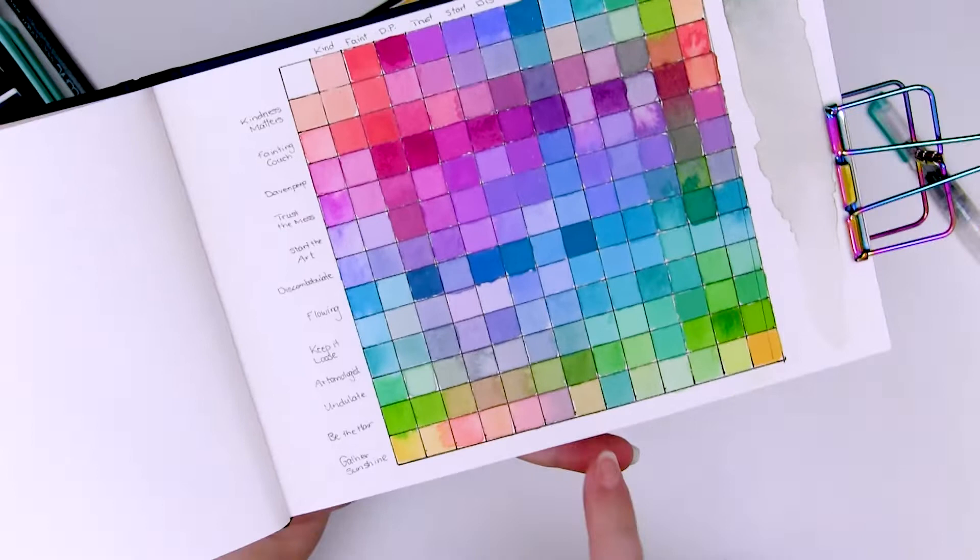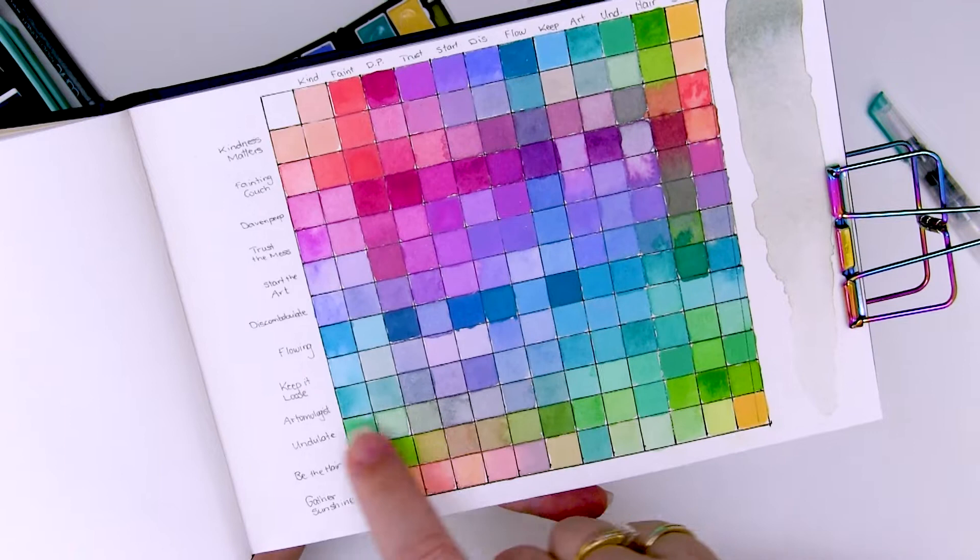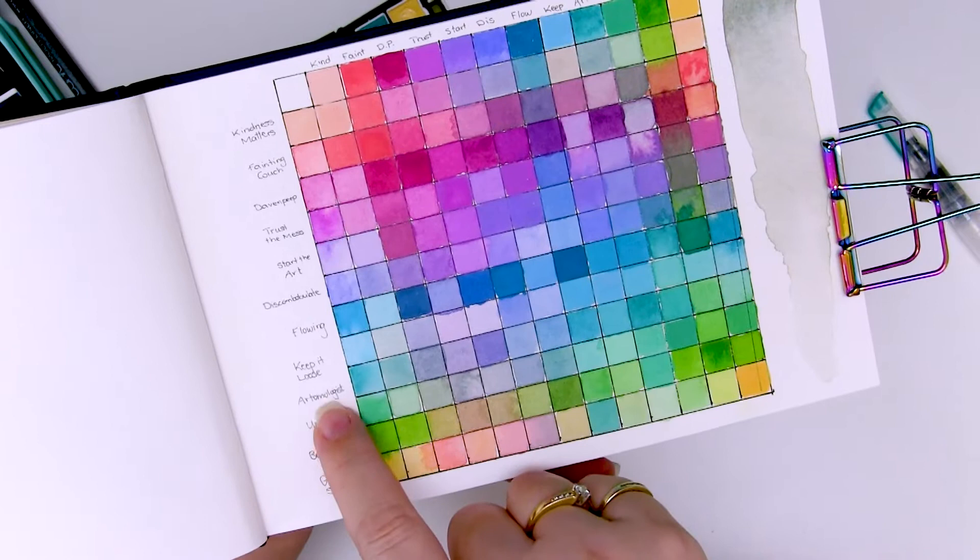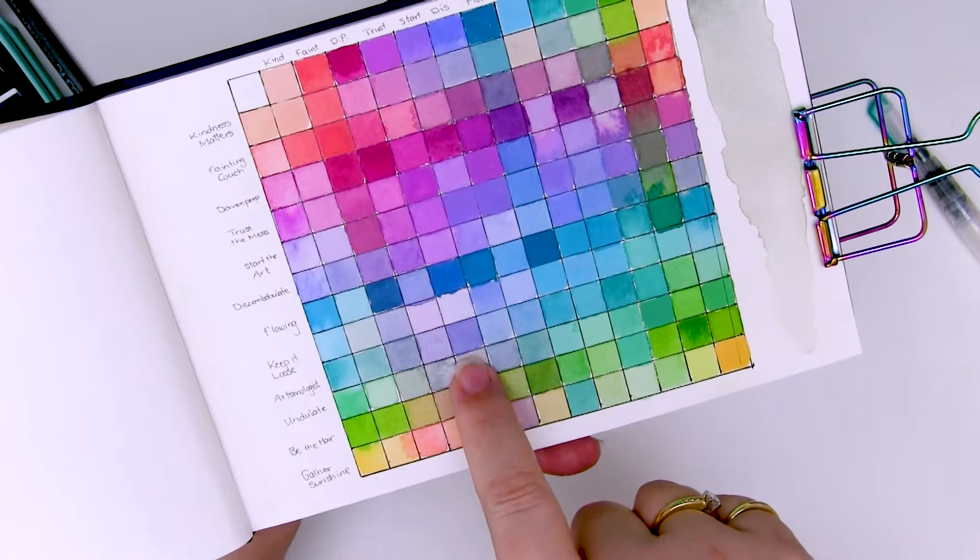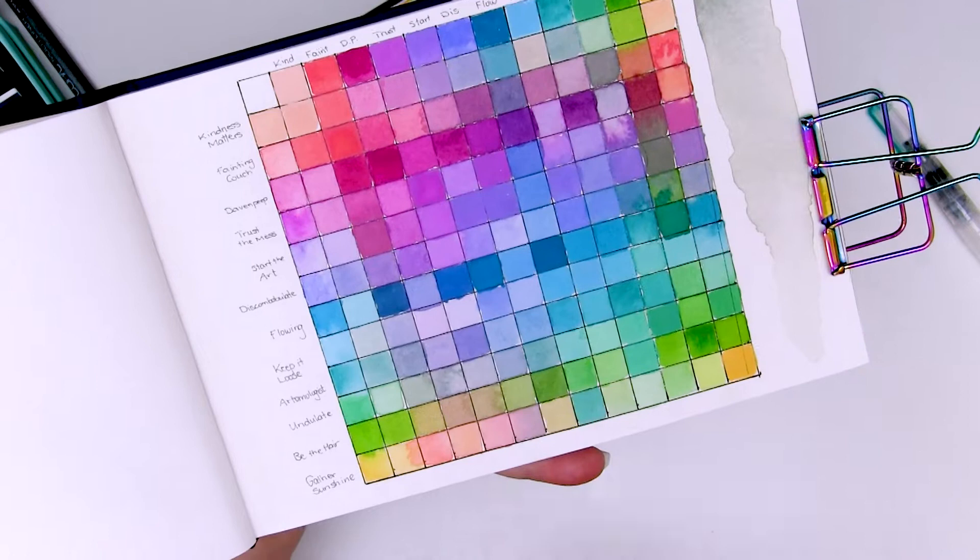And whenever I would like to go and make a new color blend, I can pop along here and see what I'm looking for. For example, this beautiful dusty blue right here. I know that it was made from Artemologist and Trust the Mess, and I know because of the name here that it was more heavy on the Artemologist color. So this gorgeous dark blue is a mix of that wonderful turquoise and purple, and it's gorgeous. And I know how to make it again because I have my references right there.